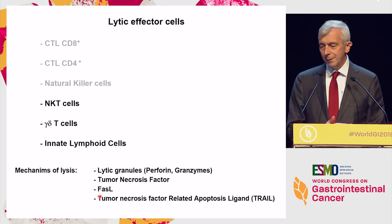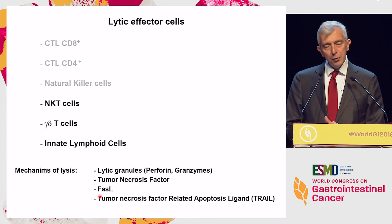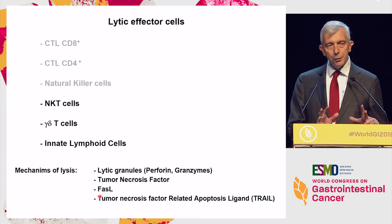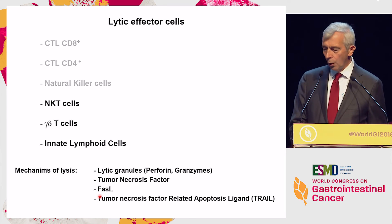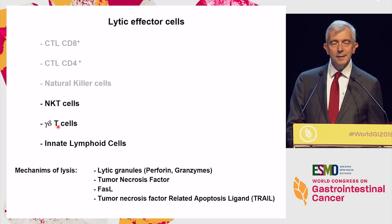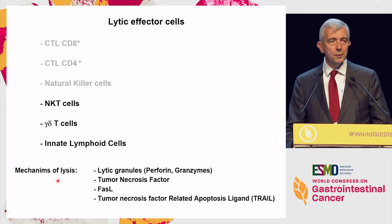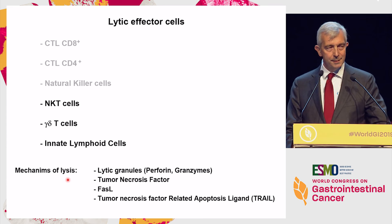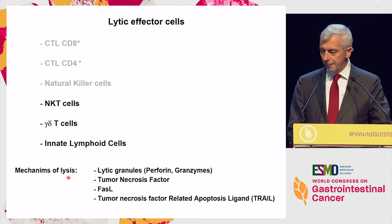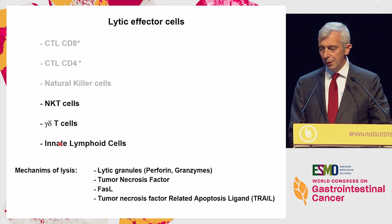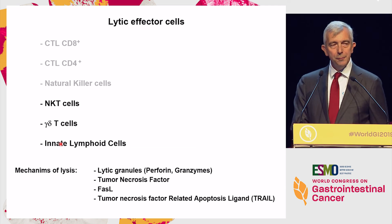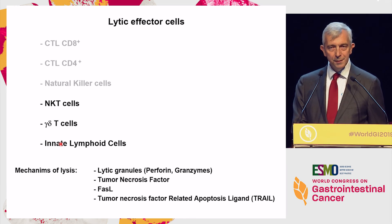Then we have others: NK T cells — some of them have invariable T cell receptors, and we know reasonably well what they recognize: lipid antigens presented on a MHC-like molecule called CD1. Gamma-delta T cells use a receptor with gamma and delta chains instead of alpha and beta — some recognize phosphopeptides produced inside the target cell. And we have innate lymphoid cells, several varieties of these. All these cells have been shown to be able to express PD-1, so everything is still possible.